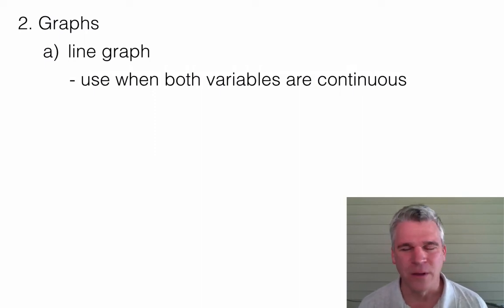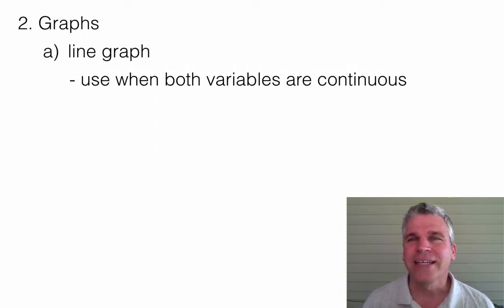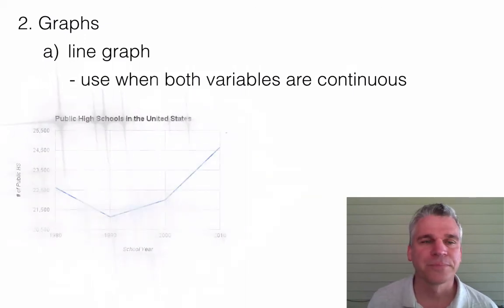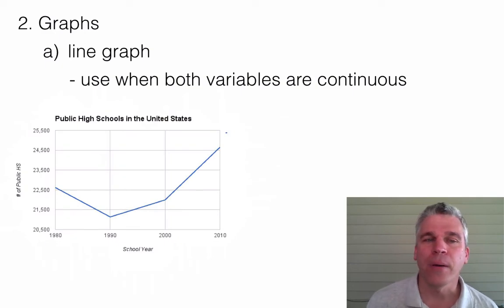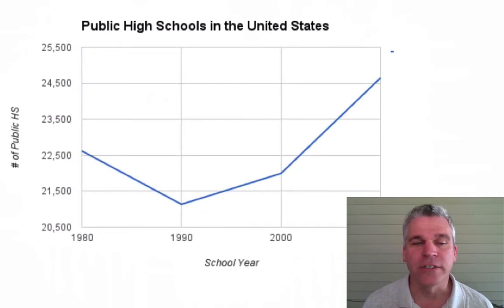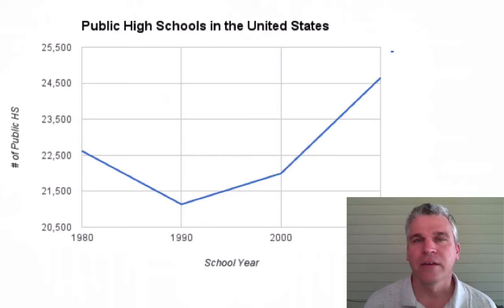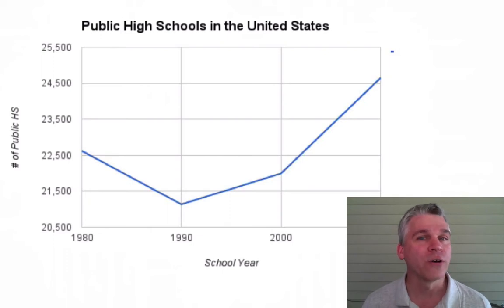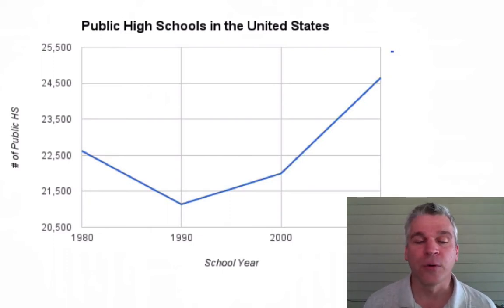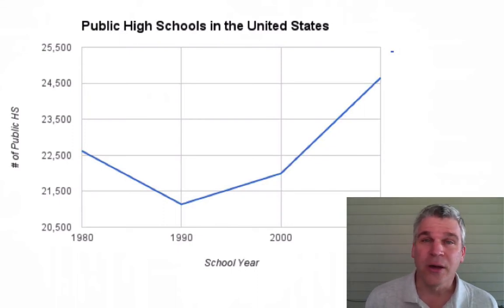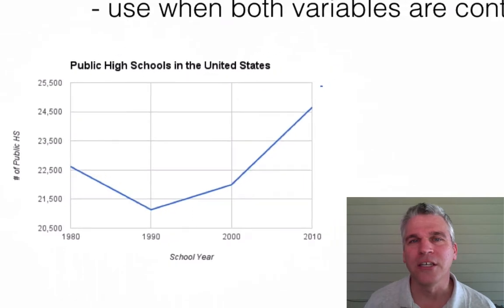Now, what does this word continuous mean? Basically, if your data is collected using numbers, then those are continuous variables. Let's take a look at the number of public high schools in the United States and how they have changed over time, starting in 1980 all the way through 2010. Notice that our dependent variable — the number of public high schools — is a number; we counted how many there were. That's a continuous variable. The school year is also a continuous variable — not only is it numbers, but it's also time. Time is always going to be a continuous variable.